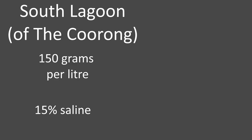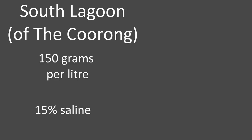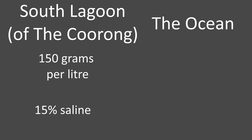Throughout the past decade, the South Lagoon has reached levels as high as 150 grams per litre. To put this into perspective, the average salinity of the ocean is around 33 grams per litre. This makes the Coorong classify as a hypersaline water body.